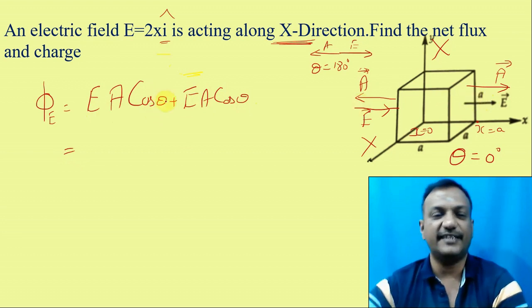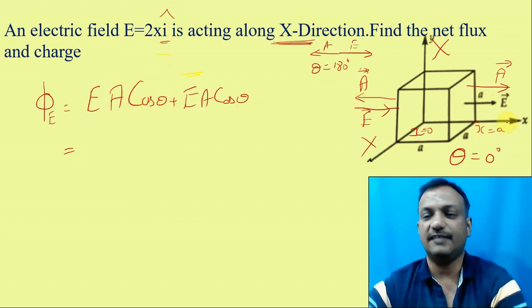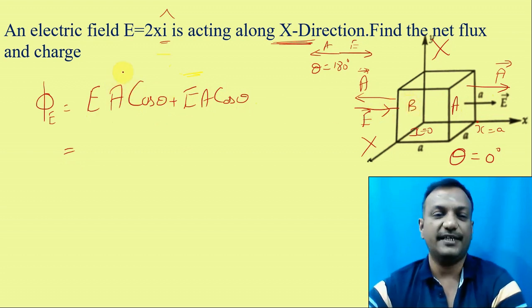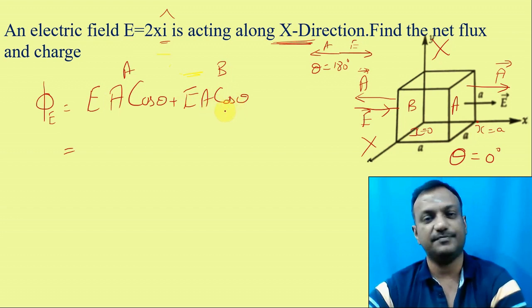The E vector is here and the A vector is here. On the two opposite sides, E vector is like this and A vector is like this, so the value of theta is 180 degrees. Now the flux formula for two sides is EA cos theta plus EA cos theta.